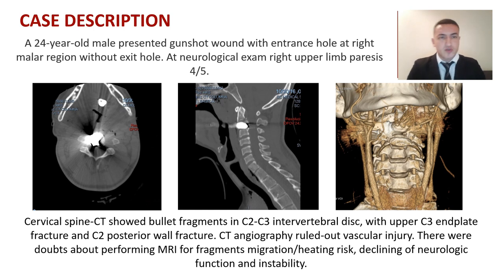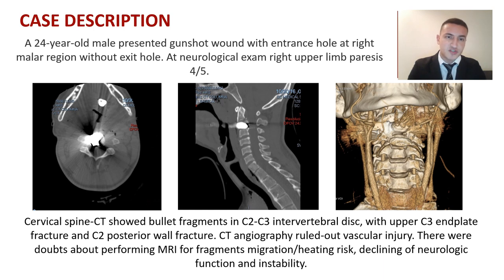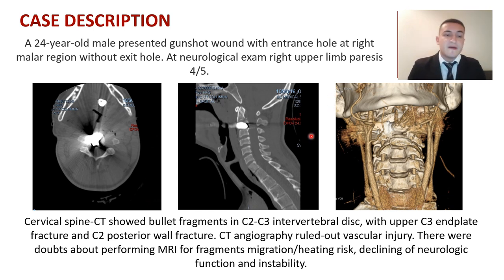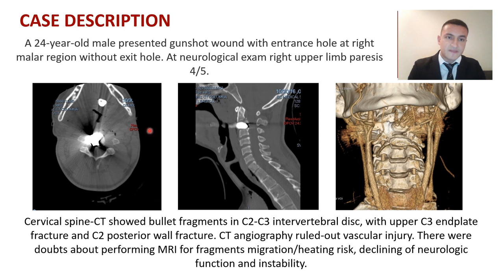We had a 24-year-old male who presented with a gunshot wound with entrance hole at the right malar region without an exit hole. On neurological exam, right upper limb paresis 4/4/5 was present. Cervical spine CT showed bullet fragments in the C2-C3 intervertebral disc with upper endplate fracture and C2 posterior wall fracture.